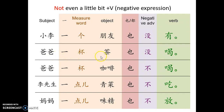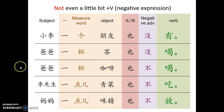第二个，爸爸一杯茶也没喝。第三个，爸爸一杯咖啡也不喝。The negative form — we have 没 and 不. The differences: 没喝 means 'have not drunk', so 'has not drunk yet'. 不喝 means 'do not drink'. So 爸爸一杯茶也没喝 means 爸爸 hasn't drunk even a cup of tea. 爸爸一杯咖啡也不喝 means he does not drink coffee at all, not even one cup.